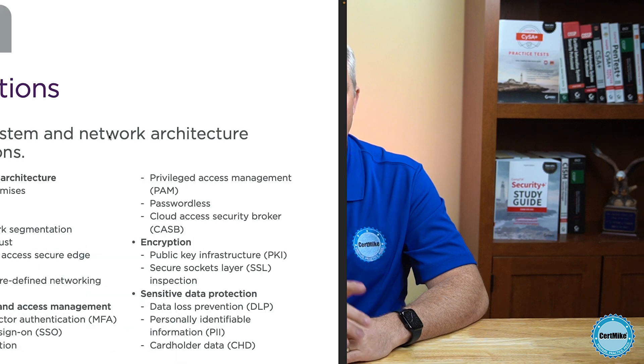I'd like to show you some of the exam objectives and point out areas that are new to the CS0-003 exam. There are a lot of small changes, so I'm just going to hit the major highlights here. Objective 1.1 is almost entirely new. It asks you to explain the importance of system and network architecture concepts in security operations. This material is all new on this exam, and it asks you to understand a variety of network and security controls.